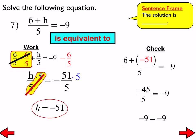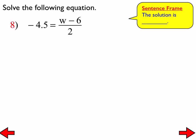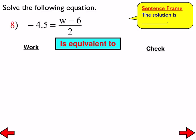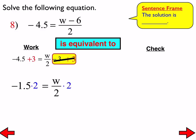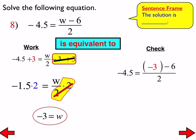Everybody do number 8, and then we are finished for today. We split up (W minus 6) over 2 into W over 2 minus 6 over 2, because that's what it is equivalent to. And negative 6 over 2 is negative 3, so the right-hand side turns into W over 2 minus 3. We add 3 to both sides, then multiply both sides by 2 — don't lose track of the negative symbol — and we end up with a solution of W equals negative 3. Checking confirms it is correct. We are finished for today.